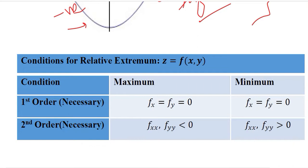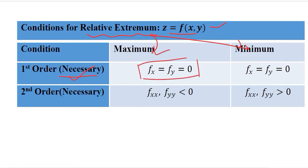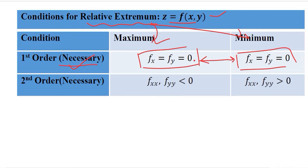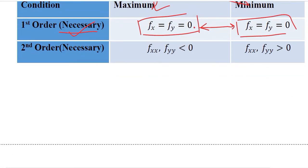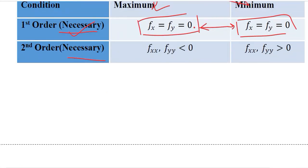Now we summarize the optimization conditions for a relative extremum — that is, a maximum and a minimum. For a function z in terms of x and y, the first order condition is a necessary condition: we set the first order partial derivatives equal to 0, regardless of whether we are finding a maximum or minimum. The second order condition has two parts: necessary and sufficient. The necessary second order condition states that the second order direct partial derivatives should be negative for a maximum, and positive for a minimum.